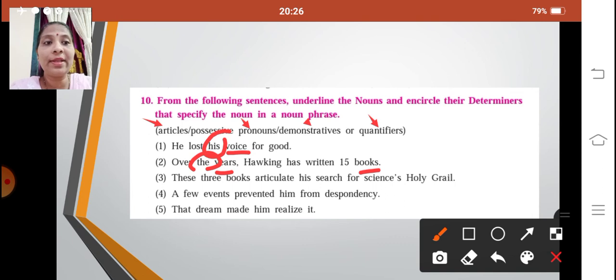So which is the determiner that is specifying that noun? It is 15, a quantifier. Next: these three books articulate his search for science's holy grail. Again over here we have two nouns: books and search. Yes, over here search is a noun. So which are the determiners? Three and his. These are the determiners in the third sentence.